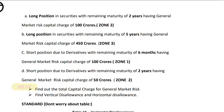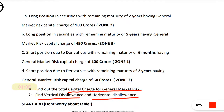We are being asked to find out the total capital charge for the market risk, and also to find the vertical disallowance and horizontal disallowance. So that is what we have to calculate.